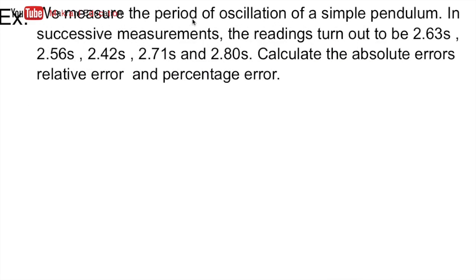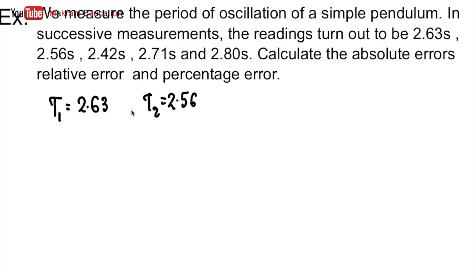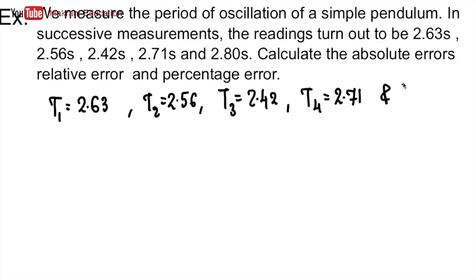In this example we measure the period of oscillation of a simple pendulum. In successive measurements the readings are: T1 = 2.63 s, T2 = 2.56 s, T3 = 2.42 s, T4 = 2.71 s, and T5 = 2.80 s. So we have five readings.